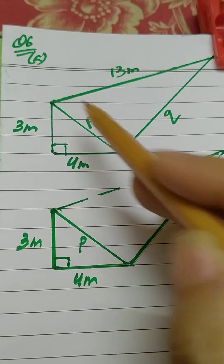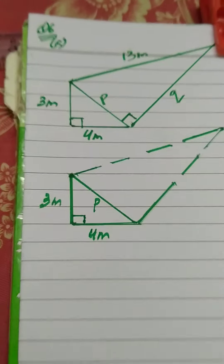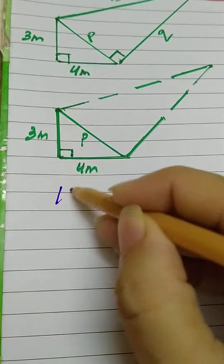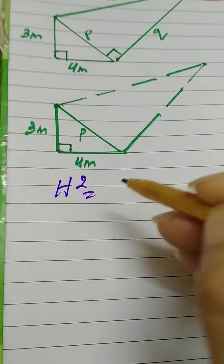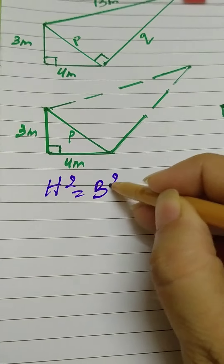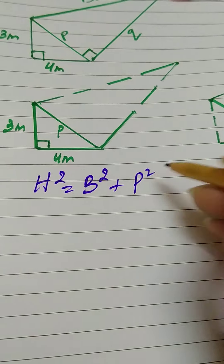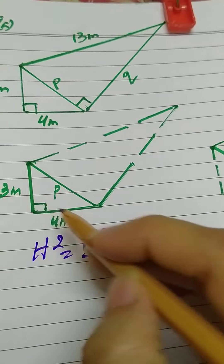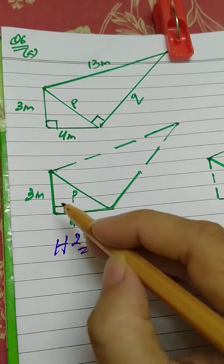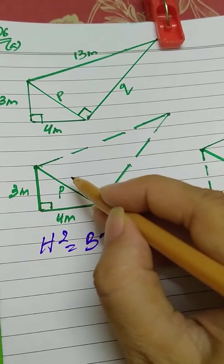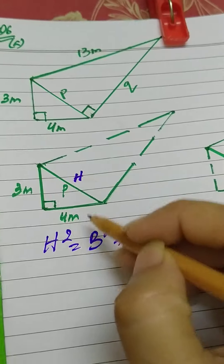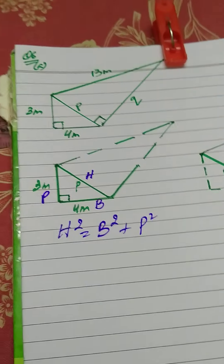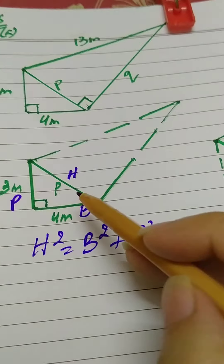Pythagoras theorem describes the relation between the three sides of a right-angle triangle. The relation is: hypotenuse squared — the square of the longest side — equals the sum of the squares of the two shorter sides. In a right-angle triangle, the two sides forming 90 degrees are the shorter sides, and the side opposite to 90 degrees is the hypotenuse. We call them hypotenuse, base, and perpendicular.